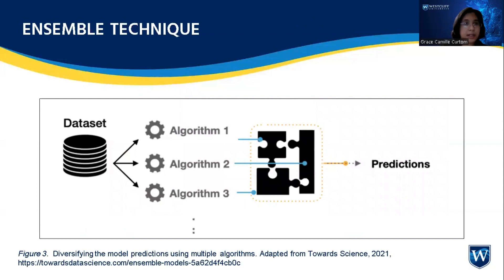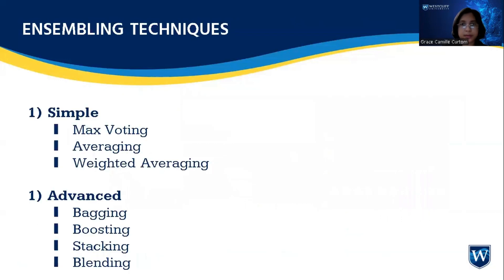And so we use the ensembling technique as shown in the picture. Ensembling technique leverages existing AI models and combines them together for a better prediction, just as we see in the picture. Ensembling technique can be divided into two types: simple and advanced. For simple ensembling technique, we can use maximum voting, averaging, or weighted averaging. For an advanced type of ensembling technique, we can use bagging, boosting, stacking, and blending.